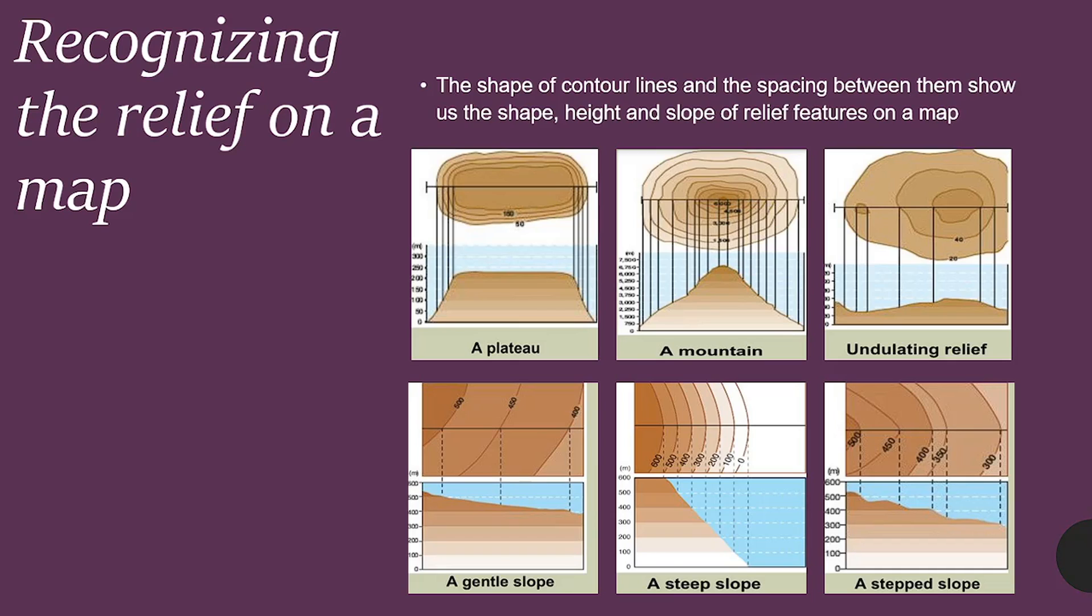Recognizing the relief on a map. The shape of contour lines and the spacing between them show us the shape, height, and slope of relief features on a map. As you can see in the examples, they showcase to you what these specific contour lines correlate to what type of feature on a map. You see a plateau. You see a mountain. You see undulating relief. A gentle slope. A steep slope. These are things that are important to know. Any questions before I move forward? These at the bottom are very important to remember.